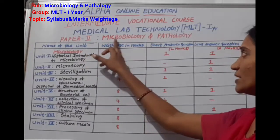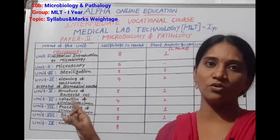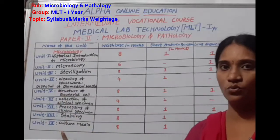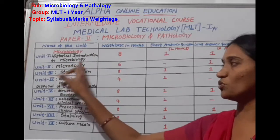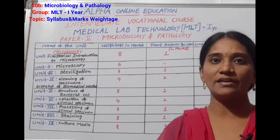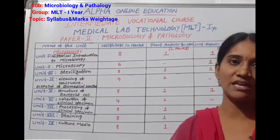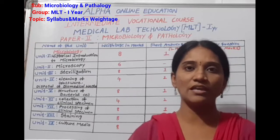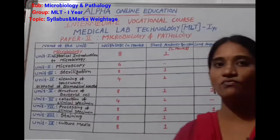The syllabus is about microbiology — the study of microorganisms. In the microbiology syllabus we have 9 units. The first unit is the historical introduction to microbiology. Here we study different scientists and their contributions to the development of microbiology — the experiments they performed and how this science evolved. That is the History of Microbiology.